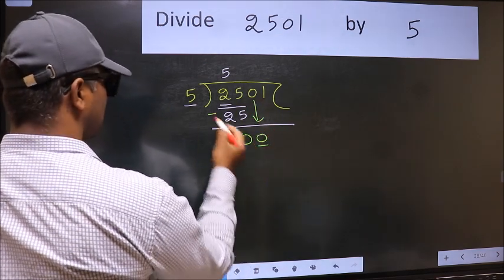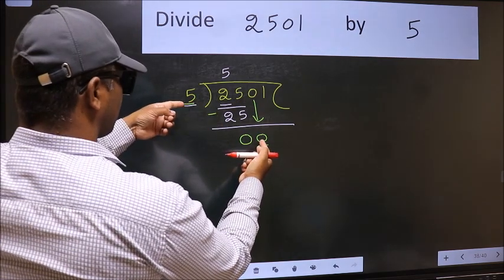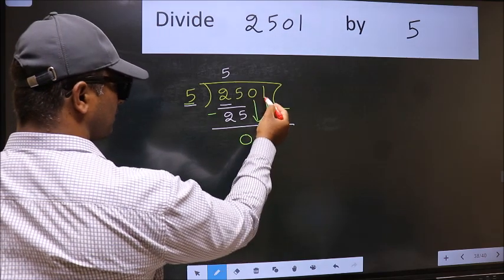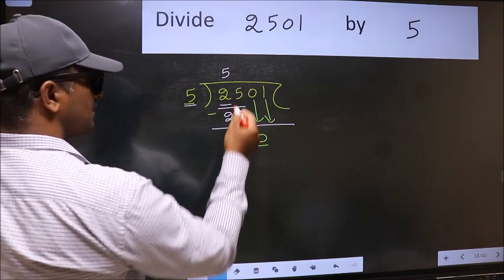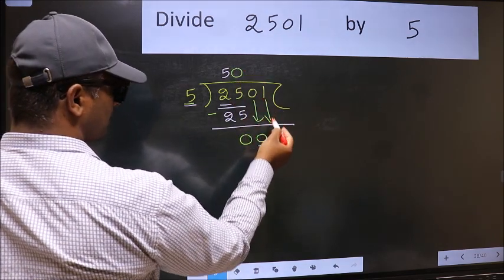Now here we have 0 and here 5. 0 is smaller than 5, so we should bring down the second number. And the rule to bring down the second number is we should put 0 here. Then only we can bring this number down.